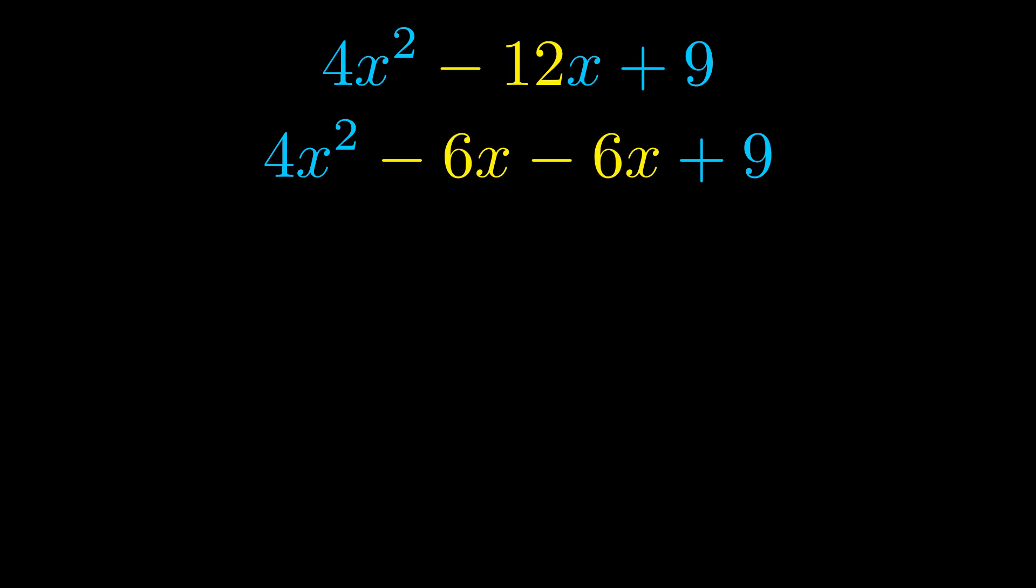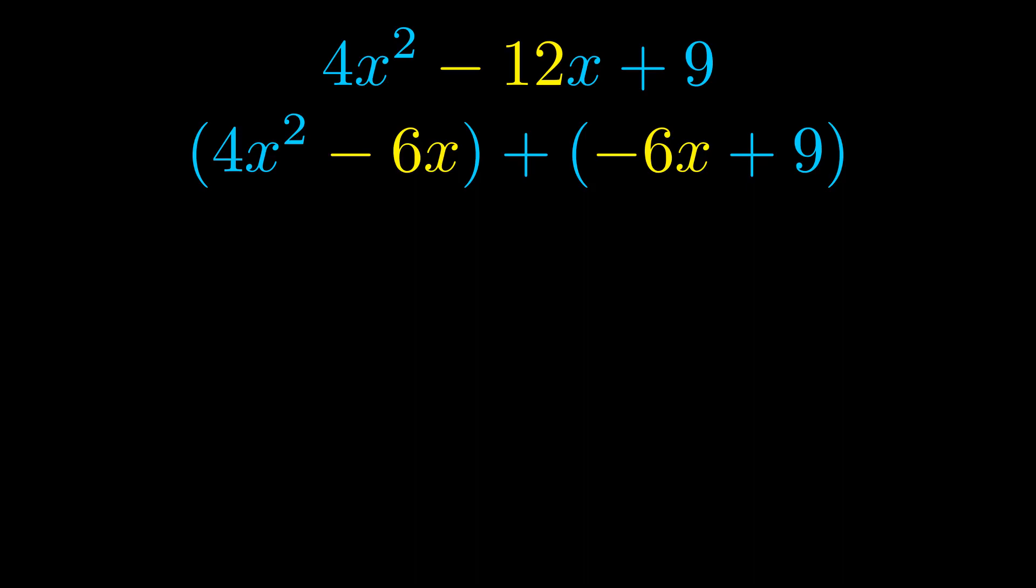Once we've done this we go ahead and we put parentheses around the first term and the last term. And we do that so that we can take the greatest common factor out of both terms. We can see the greatest common factor is now outside in green.